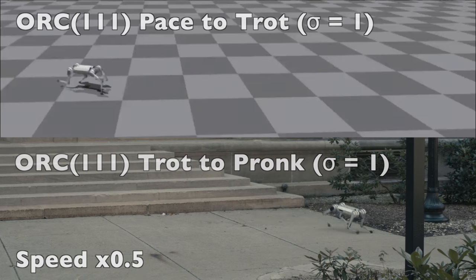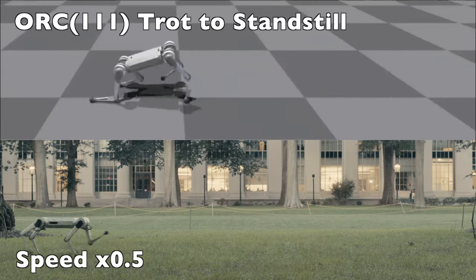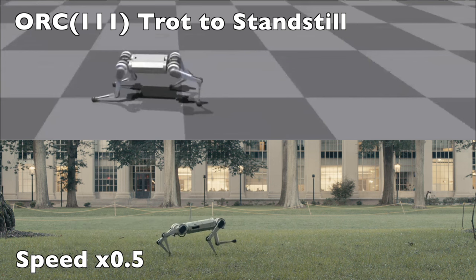We're still working on sim-to-real gaps causing different convergence patterns, but the hardware is generally able to replicate standard gait tracking and stopping.